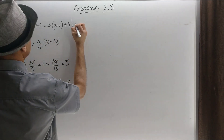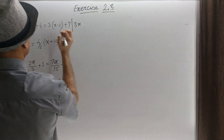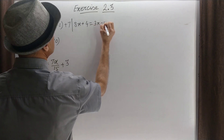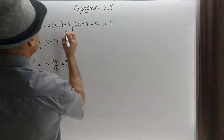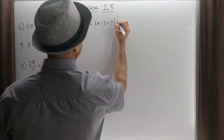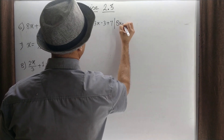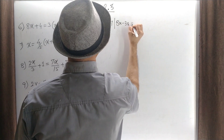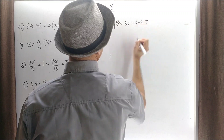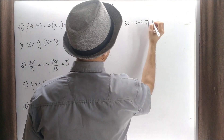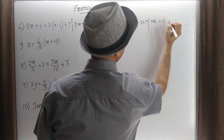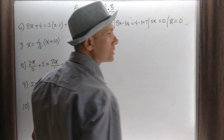This can be written as 8x plus 4 is equal to 3x minus 3 plus 7. This can be written as 8x minus 3x is equal to minus 4 minus 3 plus 7. So 5x is equal to 0. Therefore x is equal to 0. Clear?